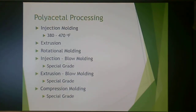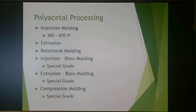Polyacetal can be processed by injection molding, extrusion, and rotational molding. There are special grades for injection molding, special grades for extrusion, blow molding, and a compression grade — each being a specific grade of polyacetal.